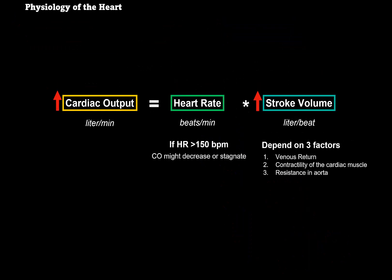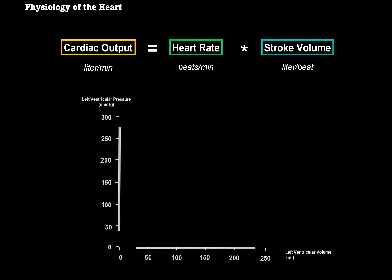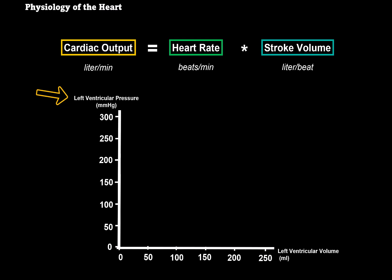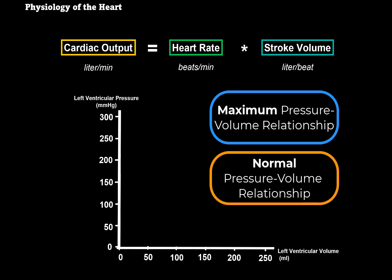What's the normal cardiac output? At rest, about 5 to 7 liters of blood is ejected per minute, given no pathology. During physical activity, it rises to about 15 to 30 liters per minute. Now let's visualize this specifically for the left ventricle. On the vertical axis we have left ventricular pressure in millimeters of mercury, and on the horizontal axis we have the volume within the left ventricle in milliliters — this is the pressure-volume curve. We'll do this in two segments: first the maximum pressure-volume relationship, then the relationship under normal resting conditions.